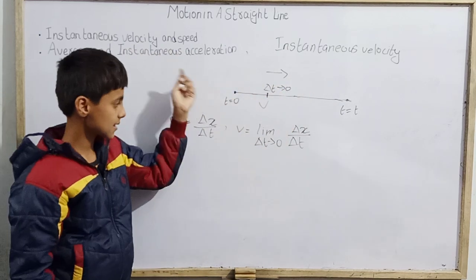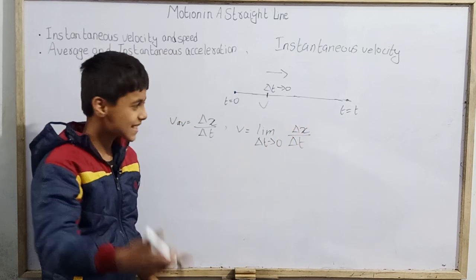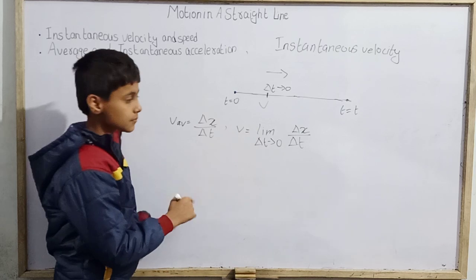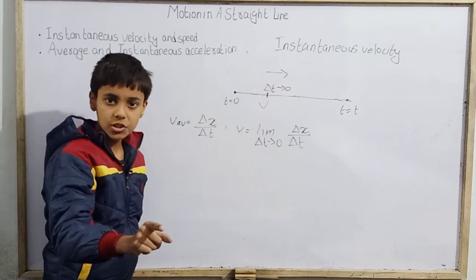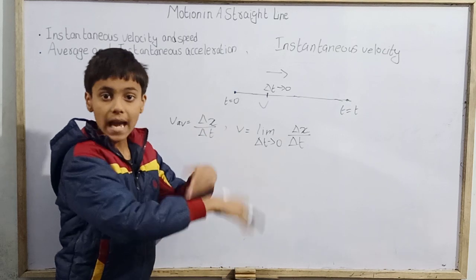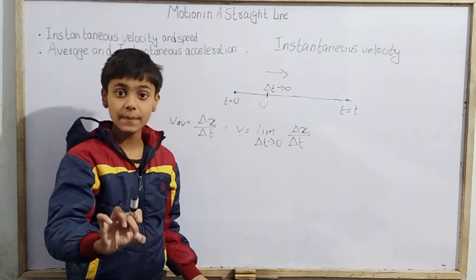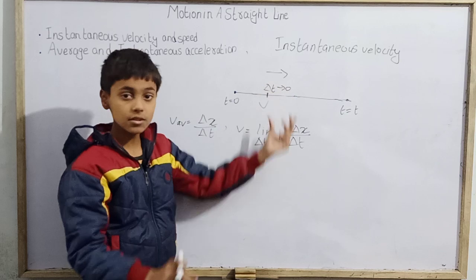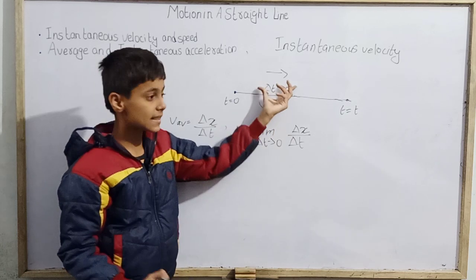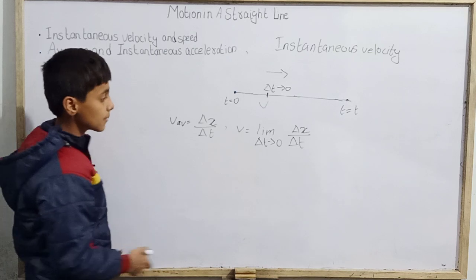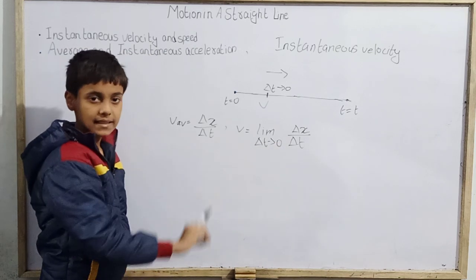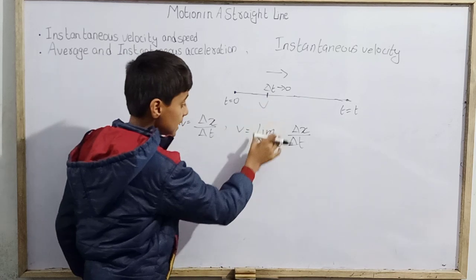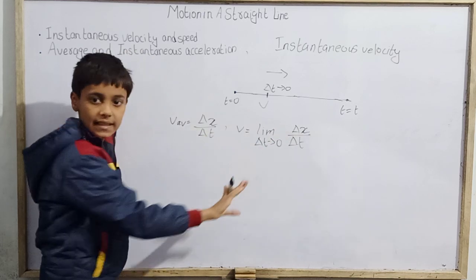Delta t cannot be exactly 0, because delta x divided by 0 is not possible — it would be infinite. But here the instant is asked, so the time duration at that instant is nearly 0. I don't want one or two more seconds. So delta t will be nearly 0, and I apply the limit: velocity equals limit as delta t tends to 0 of delta x divided by delta t.